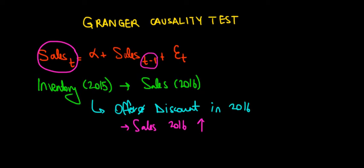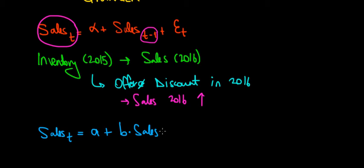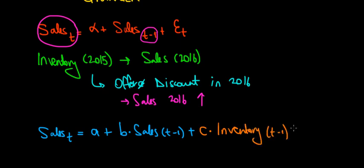To account for this effect, we run a new regression: sales at time t equals a constant a, plus b times sales from the previous period t-1, plus c times inventory in the previous period, plus the error term for the unexplained variation in results.